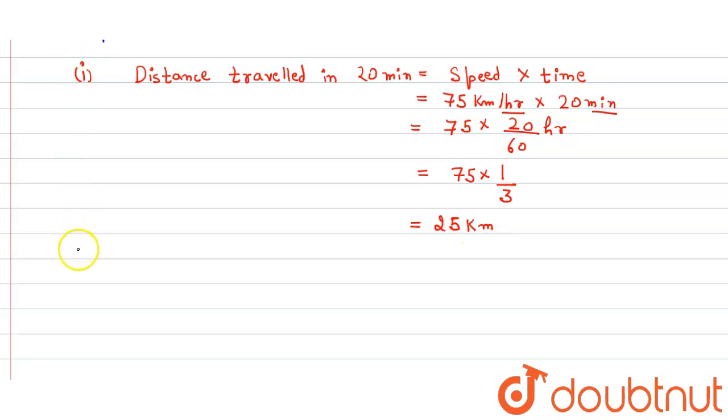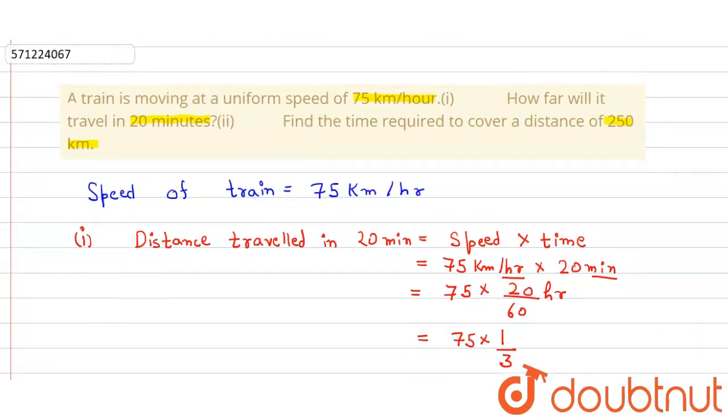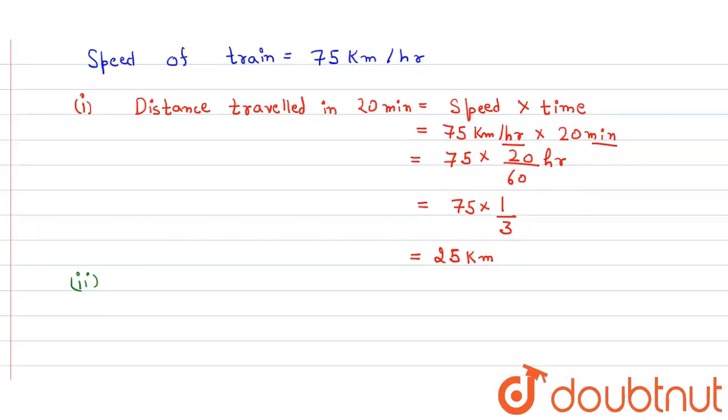And in the second part, we have to find time required to cover a distance of 250 kilometer. So we know that the time is equal to distance upon speed.